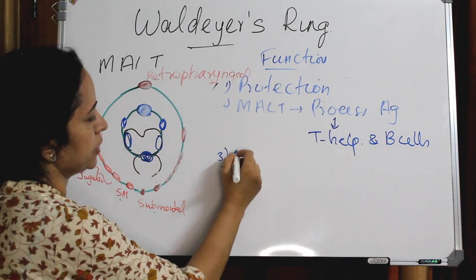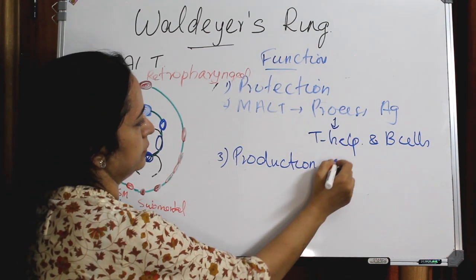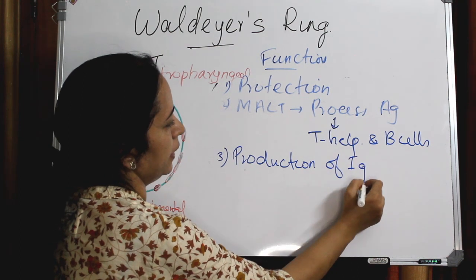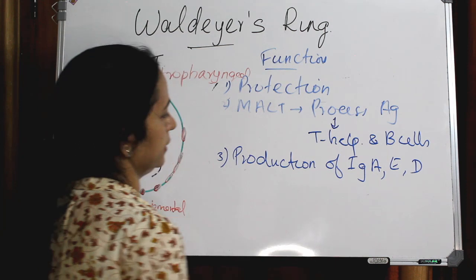Next is production of immunoglobulins, especially IgA, IgE, and IgD production.